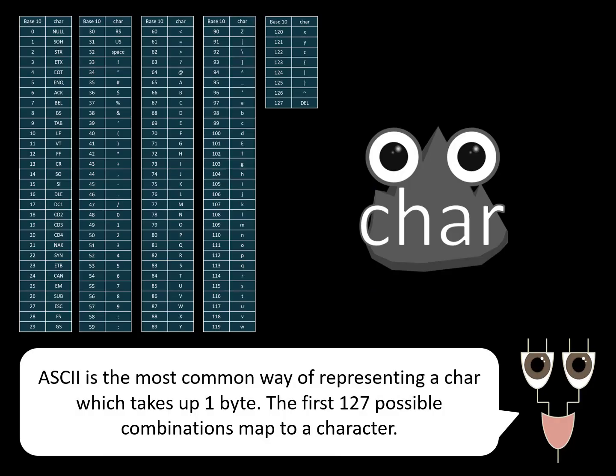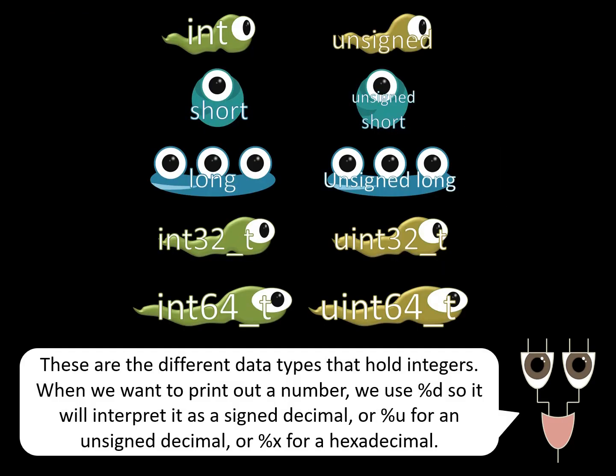ASCII is the most common way of representing a char which takes up one byte. The first 127 possible combinations map to a character. These are the different data types that hold integers. When we want to print out a number, we use %d so it will interpret it as a signed decimal, or %u for an unsigned decimal, or %x for a hexadecimal.